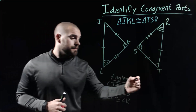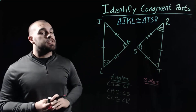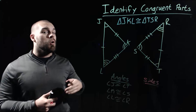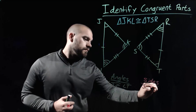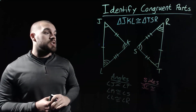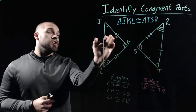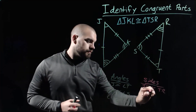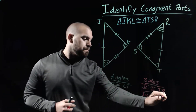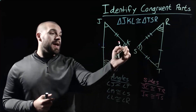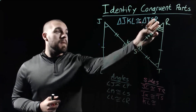Now looking at the congruent sides, we'll also look at things that are marked similarly with dash marks. Starting with segment JL on the left triangle — looking at the other triangle, the one with one dash mark is segment TR. The segment from J to K has two dash marks, and segment TS also has two dash marks, so those are congruent. Our last sides: segment KL has three dash marks, matching segment SR on the other triangle. So there are all the congruent angles and sides listed out.